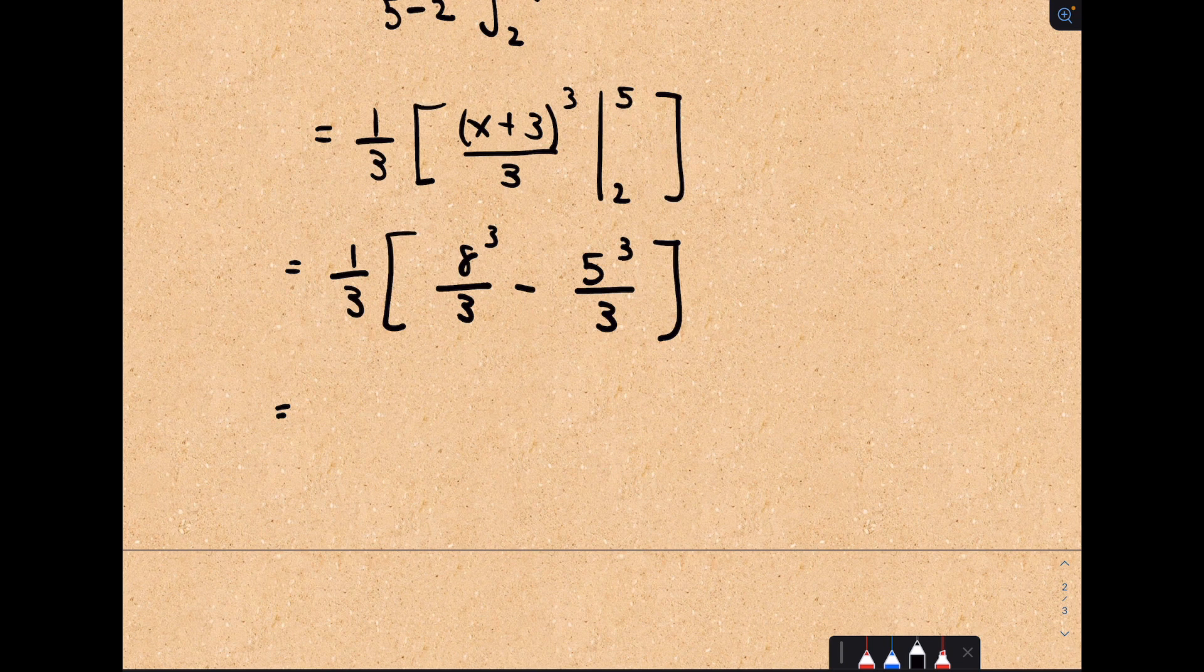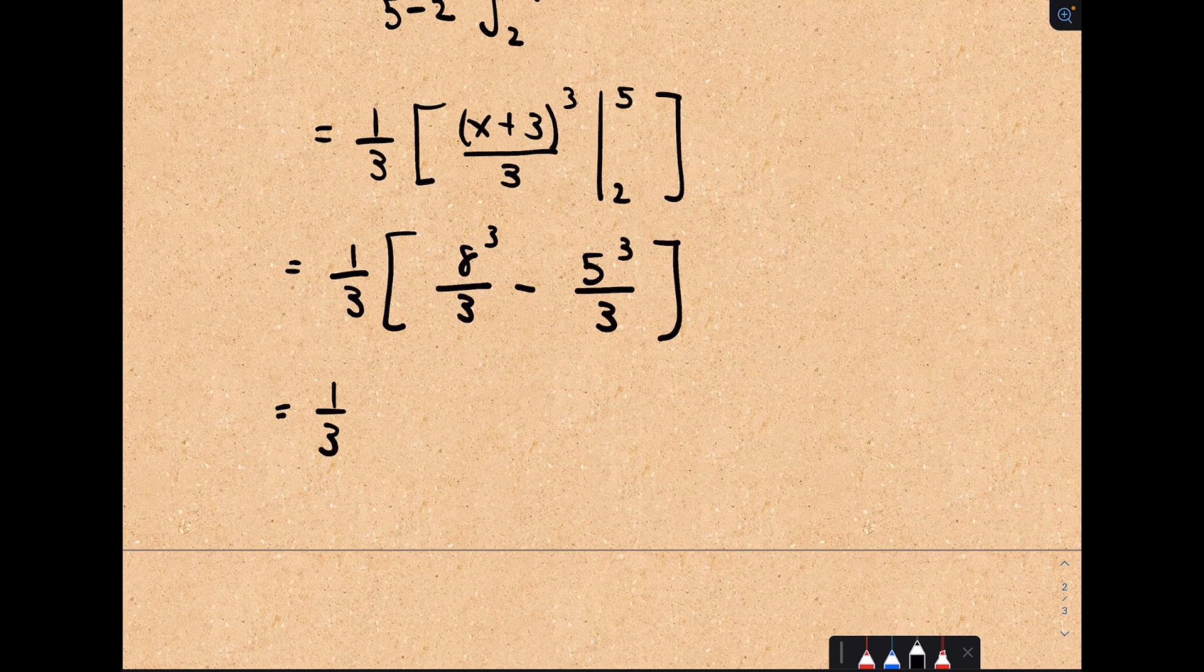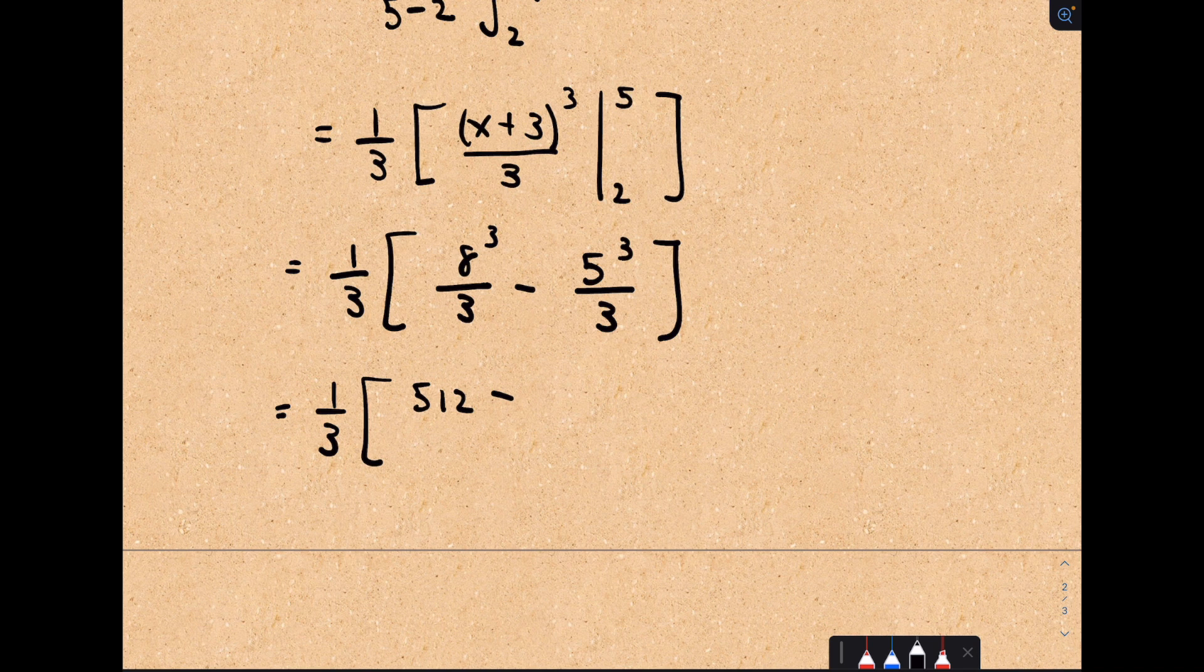Let's see. 8 to the third, that's 512. 5 to the third, that's 125, over 3.